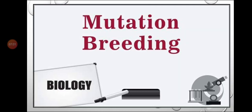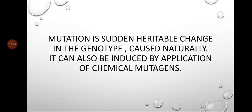The next topic is mutation breeding. Mutation means a sudden heritable change in the genotype. Mutations occur naturally, but they can also be induced by applying chemical mutagens. So mutations can be natural or artificially induced.